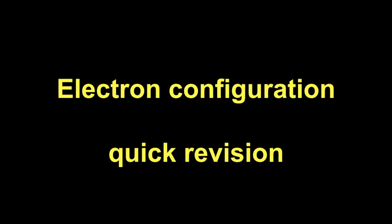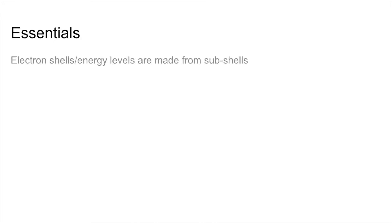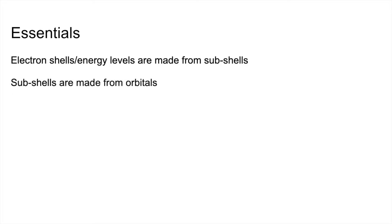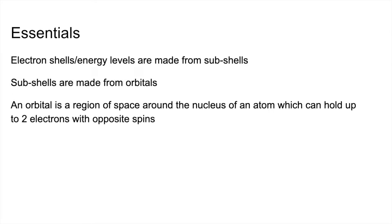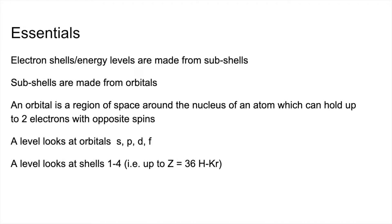Quick revision video on electron configuration. We'll start with the essentials. Electron shells or energy levels are made from subshells. Subshells are made from orbitals. An orbital is a region of space around the nucleus which can hold up to two electrons with opposite spins. At A level we look at orbitals S, P, D and F, and we look at shells one through to four — in other words hydrogen all the way to krypton.